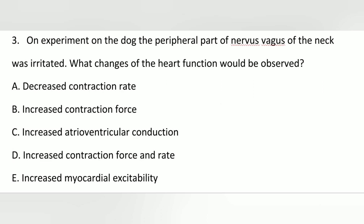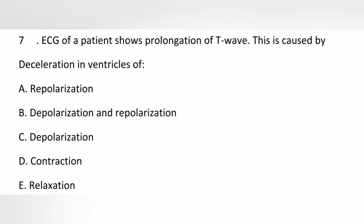Another question again involves the vagus nerve — the vagus nerve mainly decreases the contraction rate. Here the vagus nerve of the neck was irritated, meaning stimulated. And the T-wave question came again: T-wave shows repolarization.